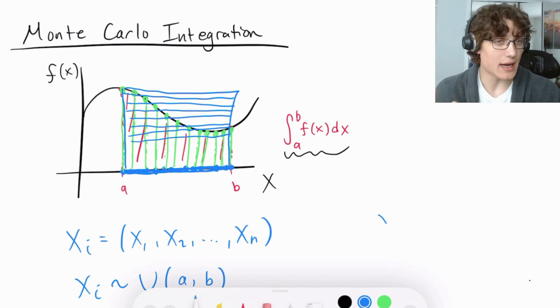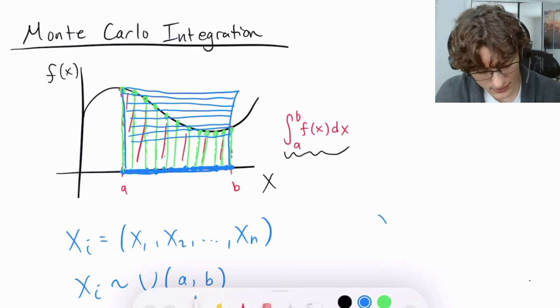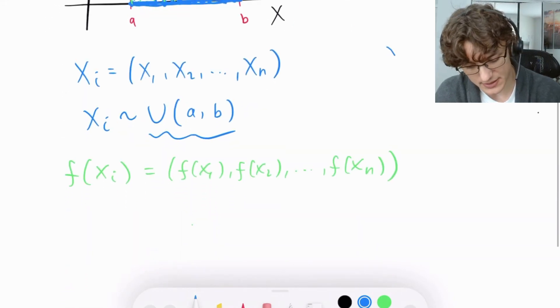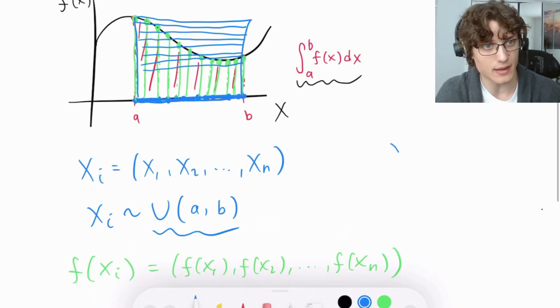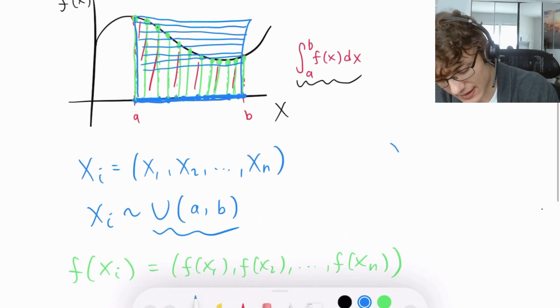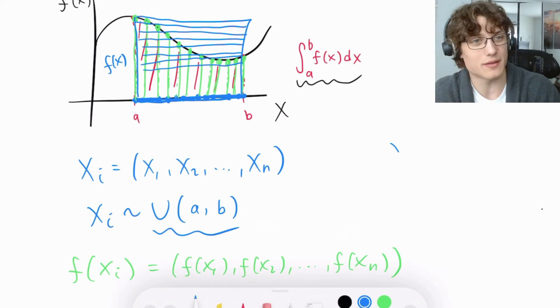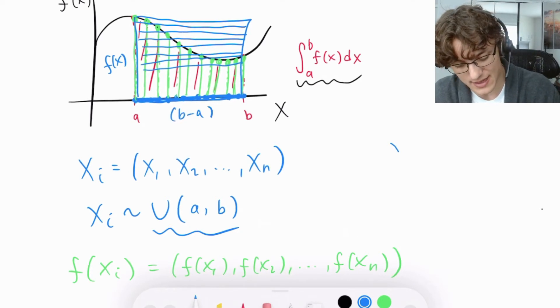What is the area of each of these rectangles? Well, the area of each of these rectangles is simply going to be defined by the height times the width. So the height is quite clearly f(x) and the width doesn't change.